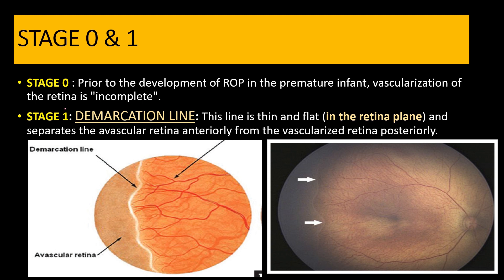In stage one ROP we see a demarcation line, which is usually a white, flat, thin line in the plane of the retina, which separates the avascular retina anteriorly and the posterior vascularized retina. So remember, stage one is the presence of a thin flat demarcation line in the plane of the retina.